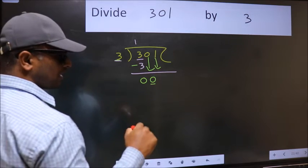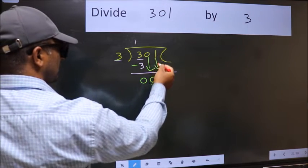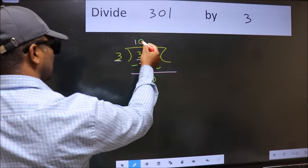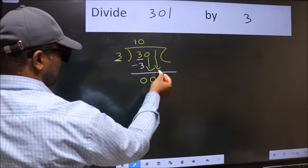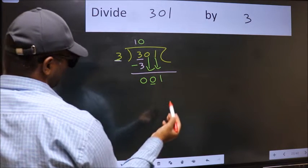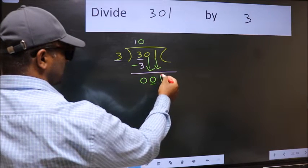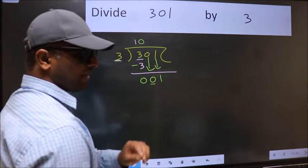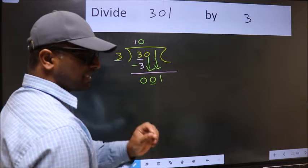So we should bring down the second number. And the rule to bring down the second number is we should put 0 here. Then only we can bring down the second number. So, 1 down. Now, after this step, the mistake happens.